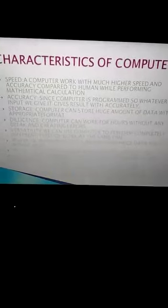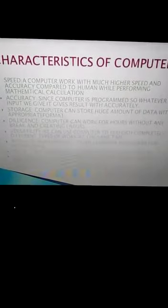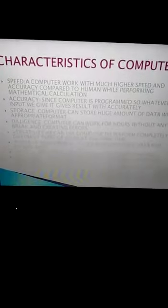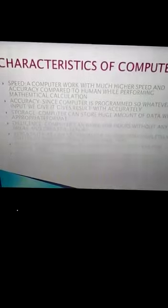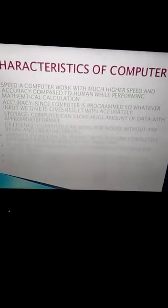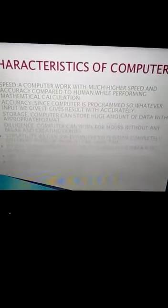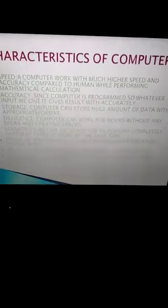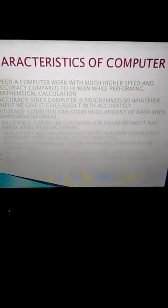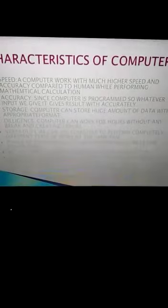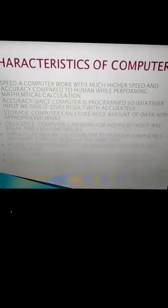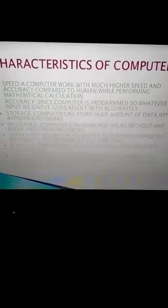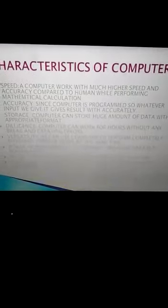Now we will discuss the characteristics of computer. First is speed — a computer works with much higher speed and accuracy compared to human beings. Next is accuracy — since the computer is programmed, whatever input we give, it gives accurate results; wrong instructions will yield wrong output. Next is storage — a computer can store a huge amount of data in appropriate format, which is impossible for human beings.